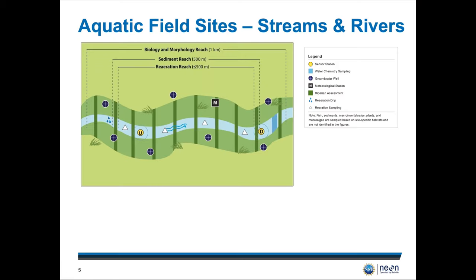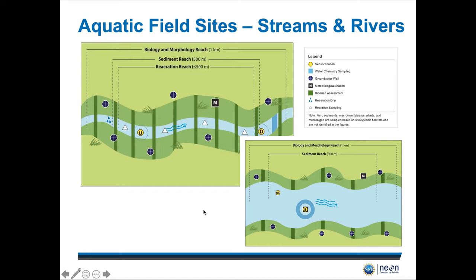Let's talk about our aquatic field sites. We have three different types of field sites and two different types of moving water field sites. We have our streams and our rivers, set up in a fairly similar way. For our streams — the ones where a field scientist can walk across — we have an upstream and a downstream sensor. We also have riparian assessment strips, dark green transects across the stream, where scientists collect observations on the flora and fauna in those zones. We also have groundwater wells and a meteorological station upstream. If the stream gets too big and it's not safe to walk across, we call it a river, and we'll have a buoy in the middle instead of upstream and downstream sensors. Otherwise, the field site layout for streams and rivers is fairly similar.